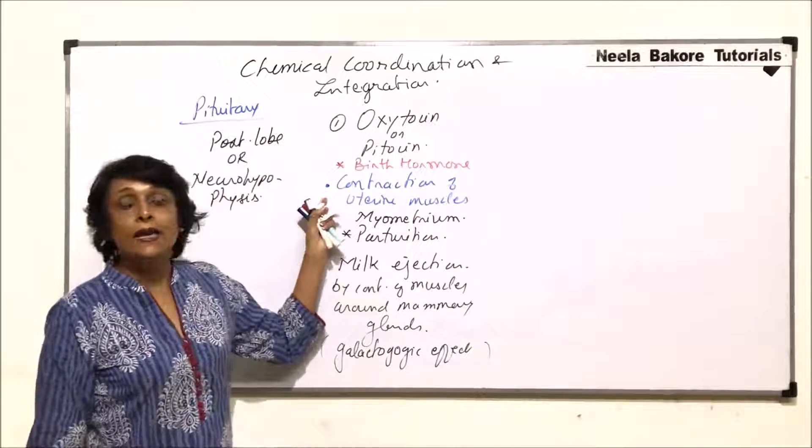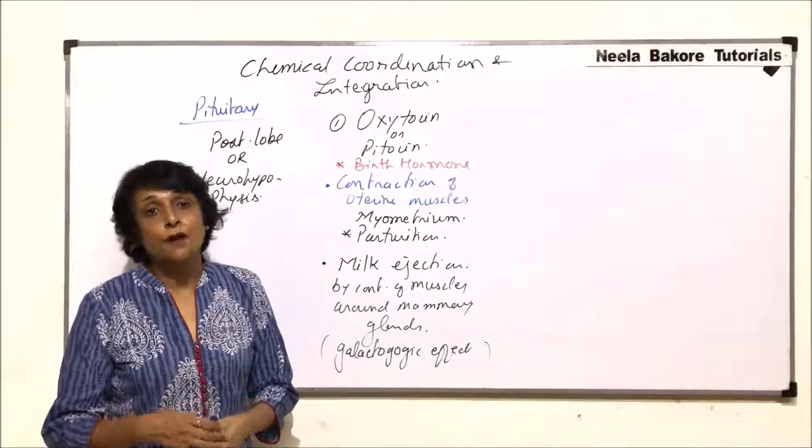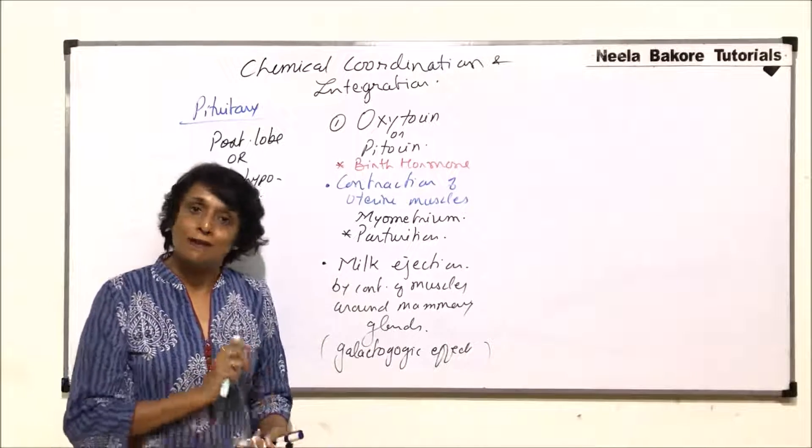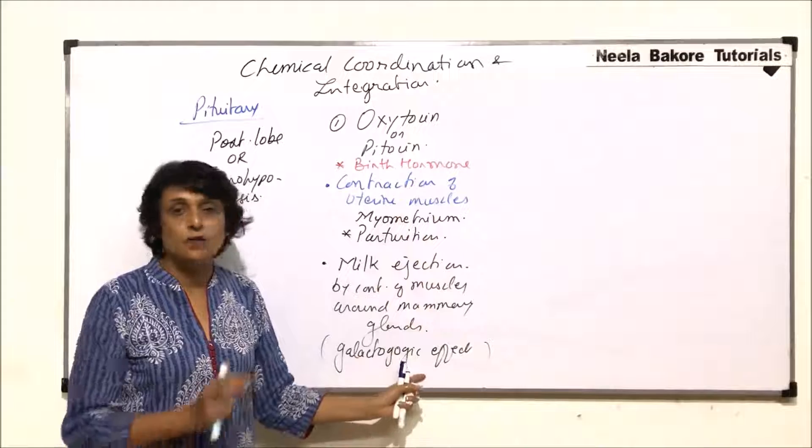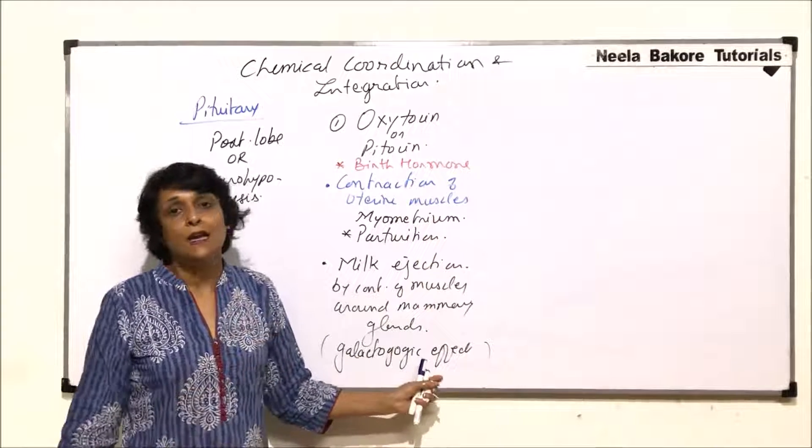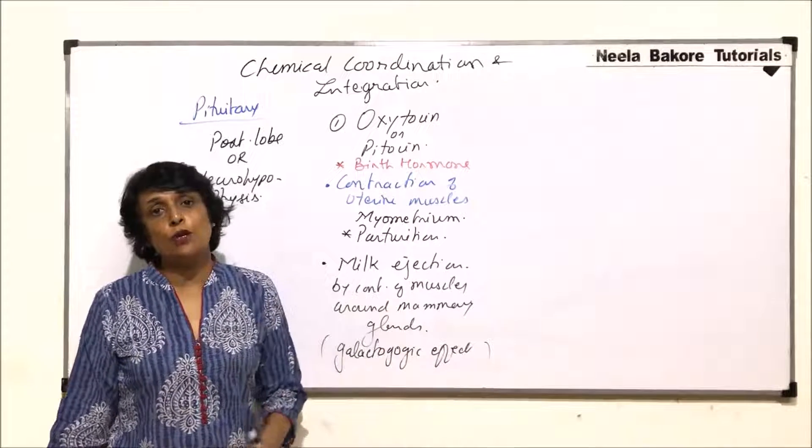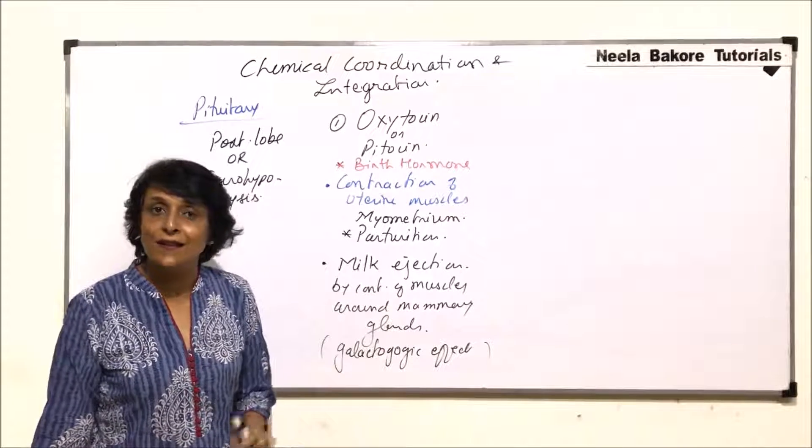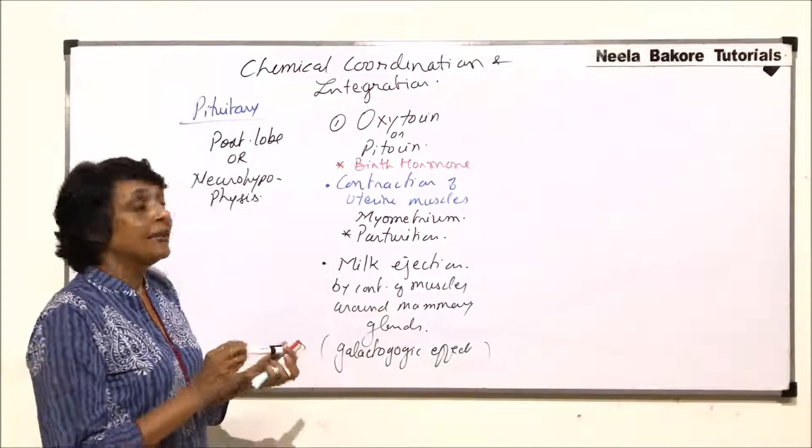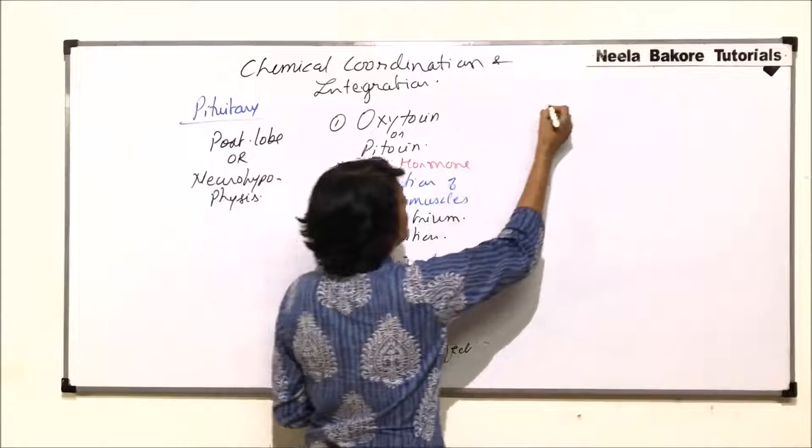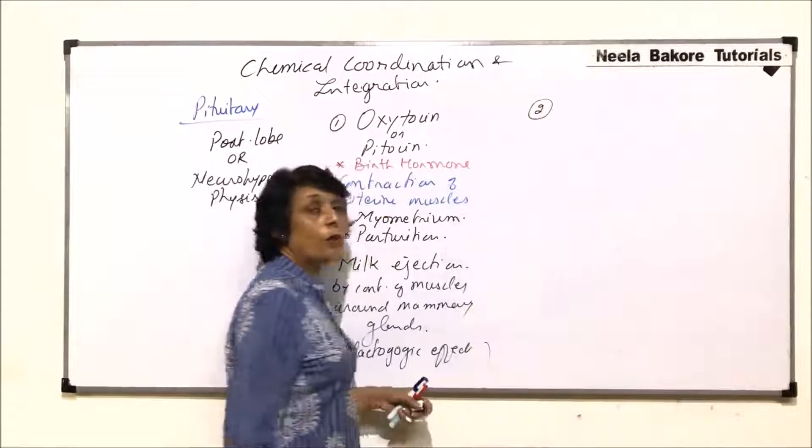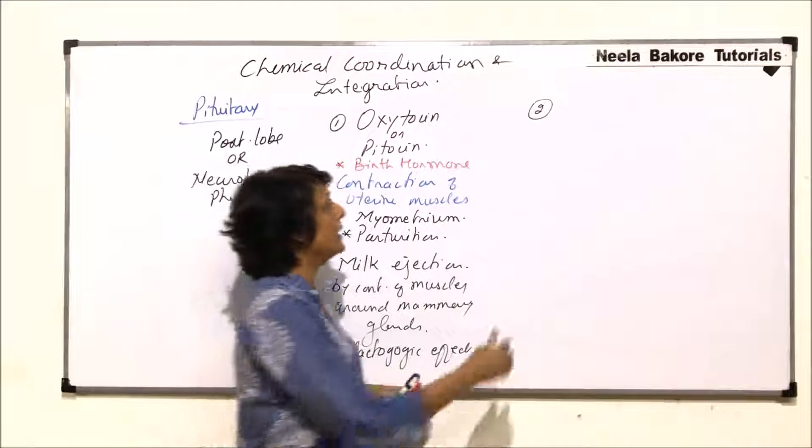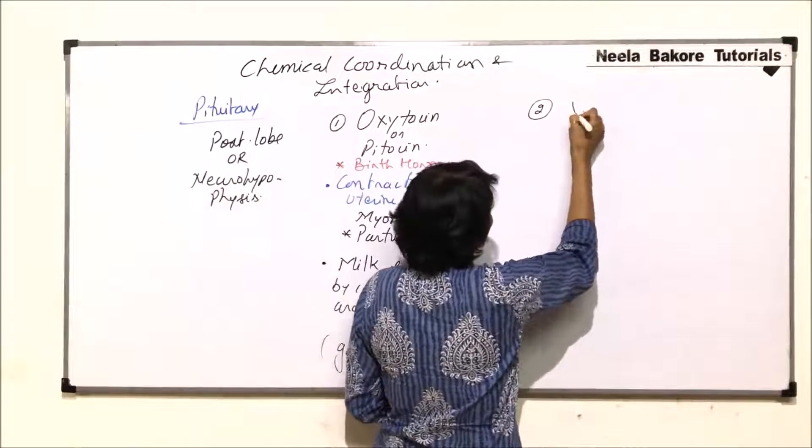In females, the function of oxytocin is very well understood and every function we have specifically written here. Oxytocin is present in males also, but its function in males has not been clearly understood yet. The second hormone released from the posterior lobe of pituitary is known as vasopressin.